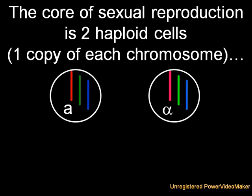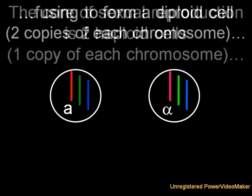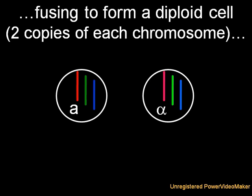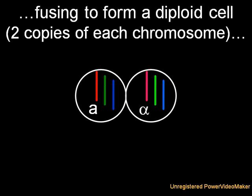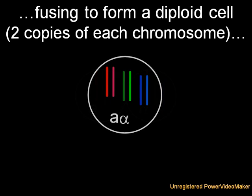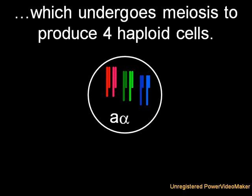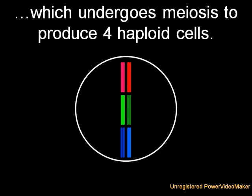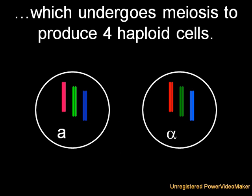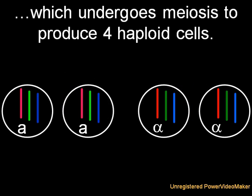Sex at its most basic level is the fusion of two haploid cells — meaning they only have one copy of each chromosome — to form one diploid cell, which has two copies of each chromosome. This then undergoes meiosis, which involves the replication of the DNA, followed by two cell divisions, eventually resulting in the production of four haploid cells.